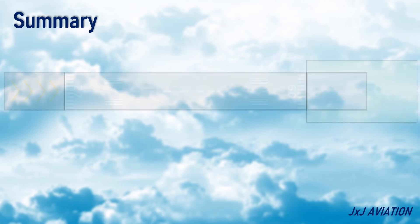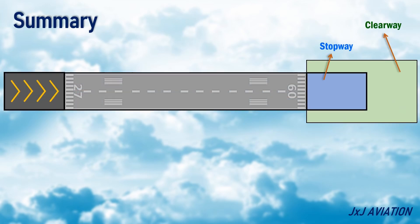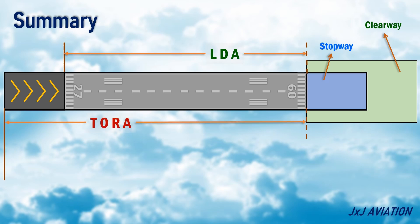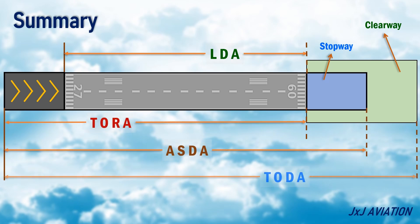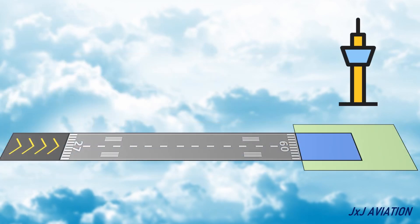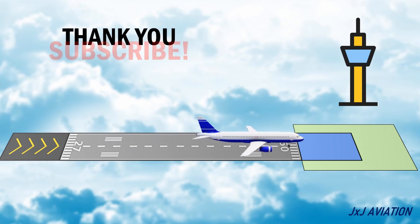This diagram summarizes all the declared distances: landing distance available, takeoff run available, accelerate stop distance available, and takeoff distance available. That's all for this video on the declared distances for a runway. If you liked the video, please share and subscribe. Thank you for watching.